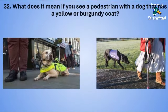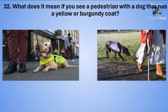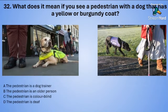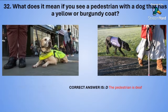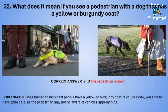Question thirty-two: What does it mean if you see a pedestrian with a dog that has a yellow or burgundy coat? A: the pedestrian is a dog trainer. B: the pedestrian is an older person. C: the pedestrian is colourblind. Or D: the pedestrian is deaf. The correct answer is D — the pedestrian is deaf. Dogs trained to help deaf people have a yellow or burgundy coat. Take extra care as the pedestrian may not be aware of vehicles approaching.